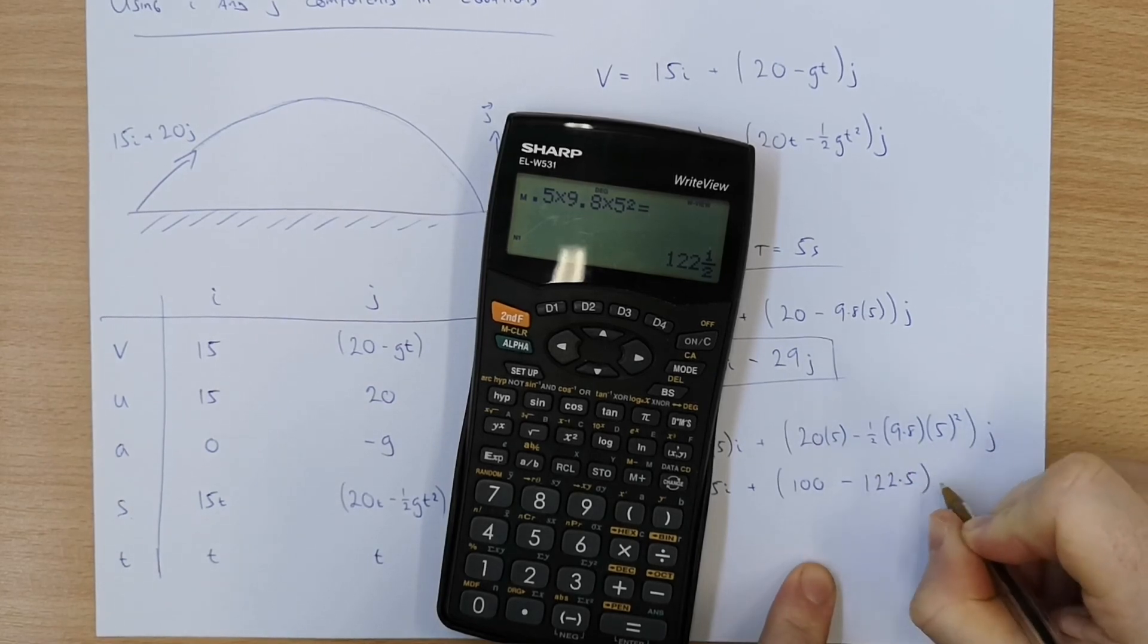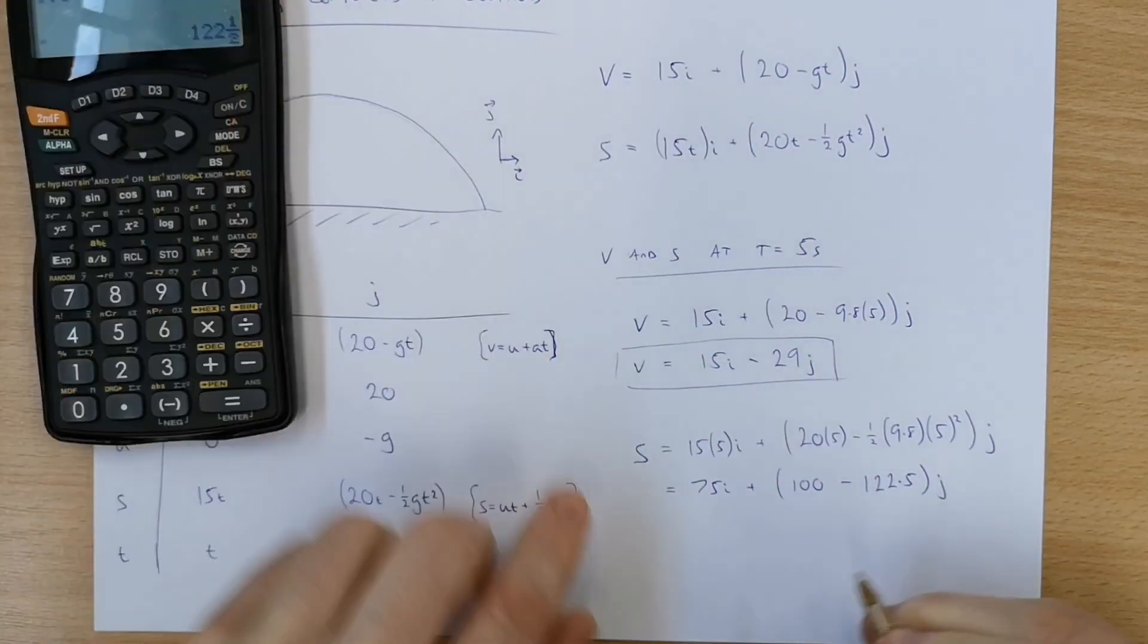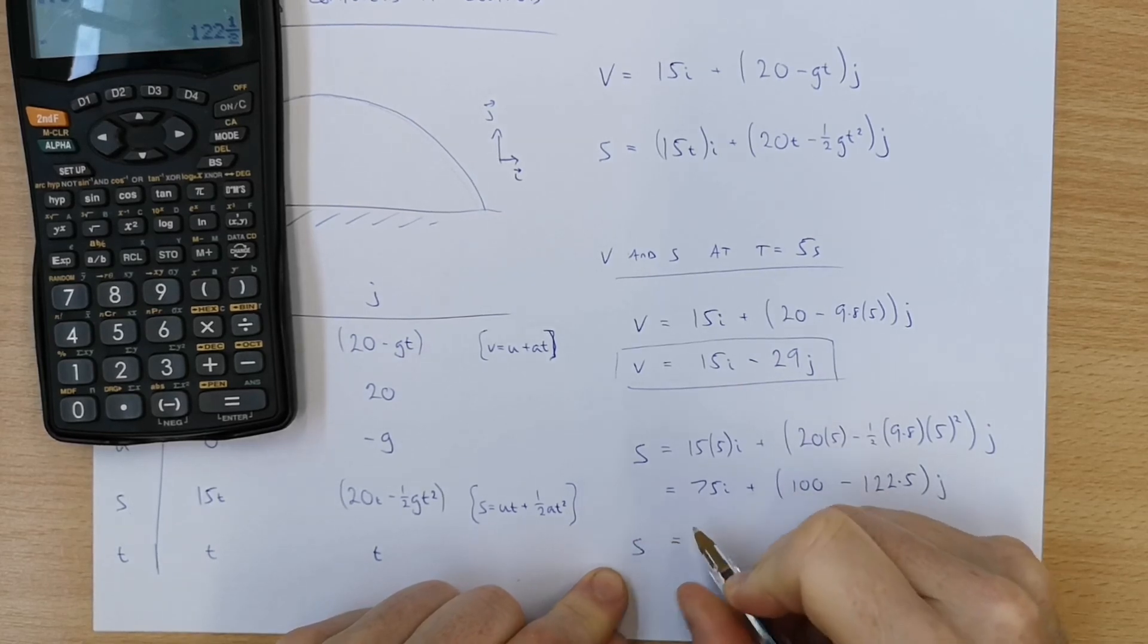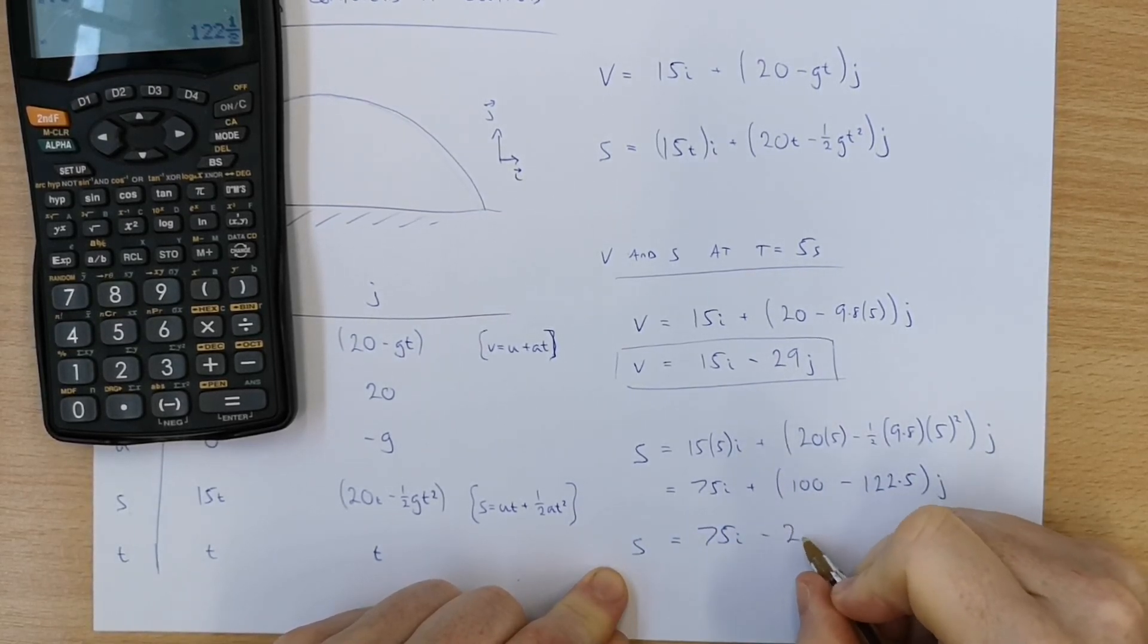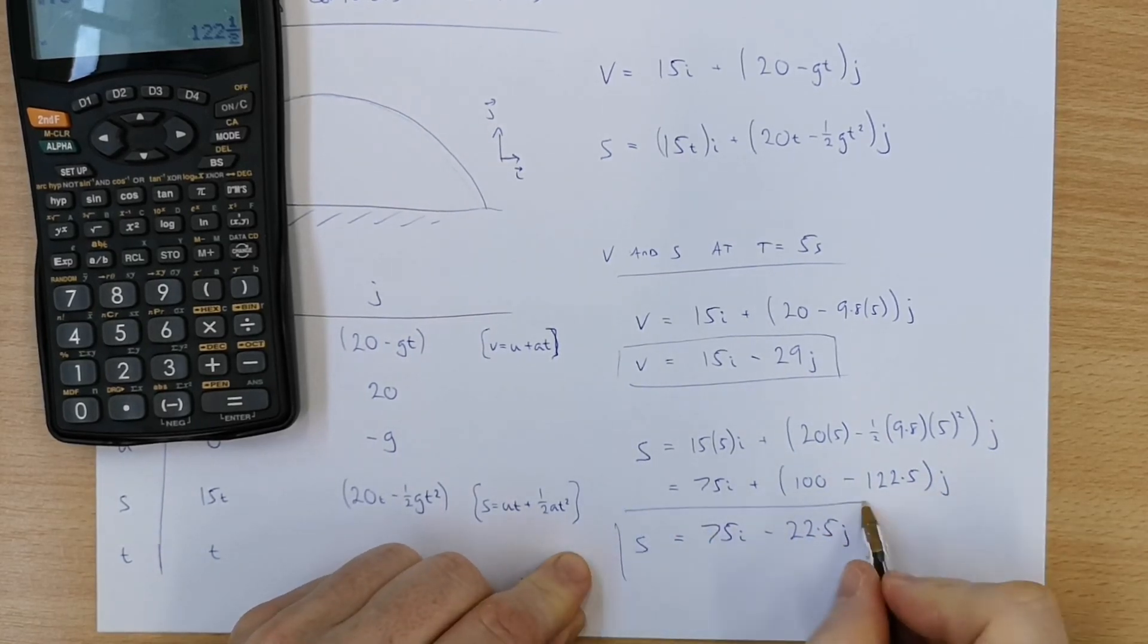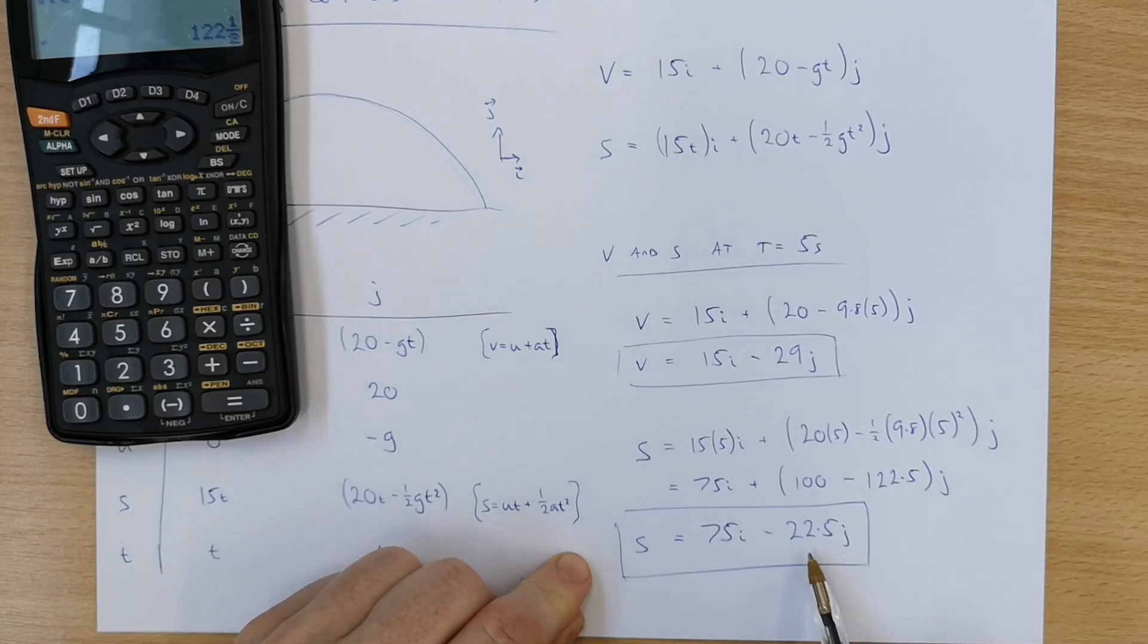122.5 in the j direction. Let's see that comes out quite nicely. 75i minus 22.5j. So that is our displacement at 5 seconds.